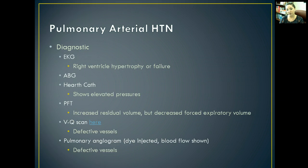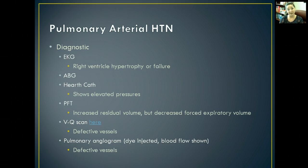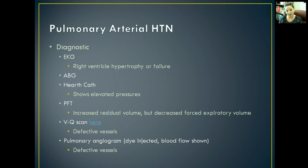To diagnose pulmonary arterial hypertension, we look at an EKG that will show right ventricular hypertrophy or failure. An ABG will show abnormal values. A heart cath will show elevated pressures within the heart. Pulmonary function tests will show an increased residual volume but decreased forced expiratory volume — they breathe in but barely let go of that air. A VQ scan — ventilation and perfusion scan — will show defective vessels. A pulmonary angiogram shows defective vessels by injecting dye, allowing blood flow blockages to be visualized.